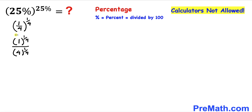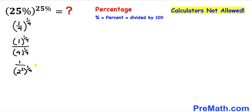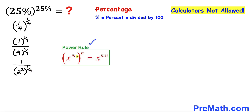Now we can see that 1^(1/4) is simply 1. The base 4 can be written as 2². Now let's recall the power rule of exponents: if we have nested exponents, this can be written as x^(m times n) — we multiply them out. So this expression becomes 1 divided by 2^(2 × 1/4), which is 2^(1/2).